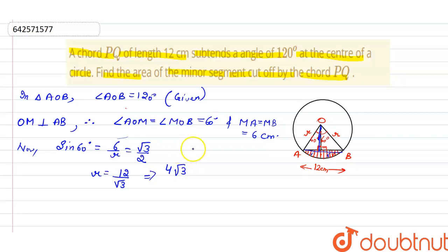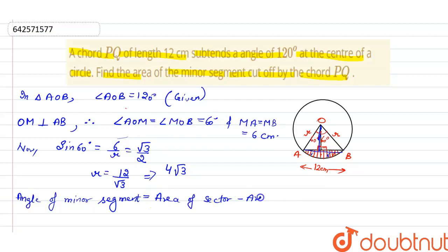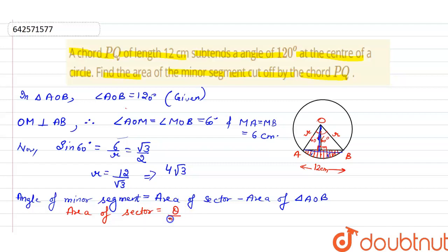Now, area of the minor segment equals area of sector minus area of triangle AOB. Area of sector equals (θ/360°) × π × r², where θ is 120 degrees divided by 360 degrees.